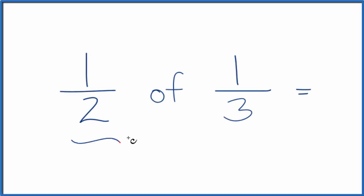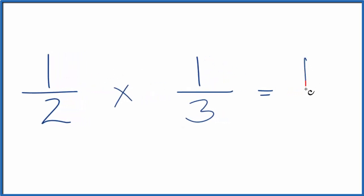When we're trying to find one-half of one-third, it's really helpful to think of the 'of' here as multiplication. So we take one times one, that gives us one, and two times three, that gives us six. One-half of one-third equals one-sixth.